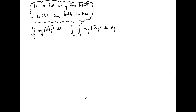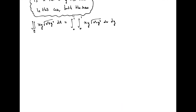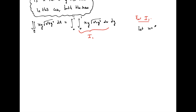To evaluate, we start on the inside, treating y as a constant and integrating with respect to x. Call this inner integral i1. The integrand has a composition of functions with the square root, so a substitution is natural. If we let u = x² + y², then du = 2x dx, and we have an x dx sitting out front — so this substitution is well-motivated.